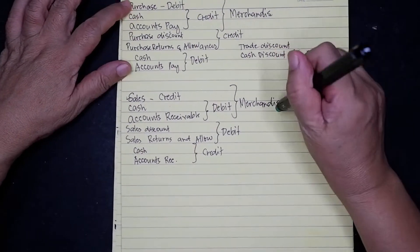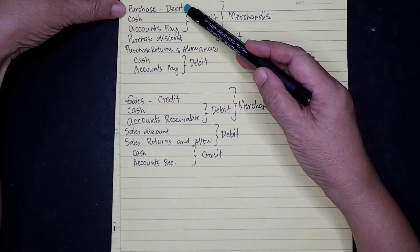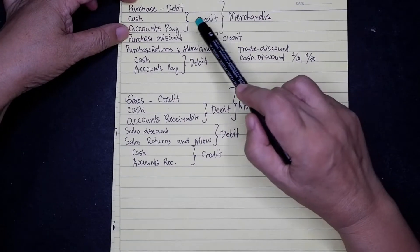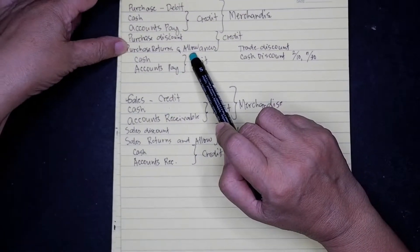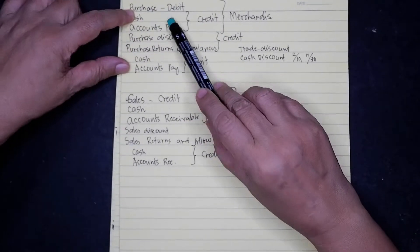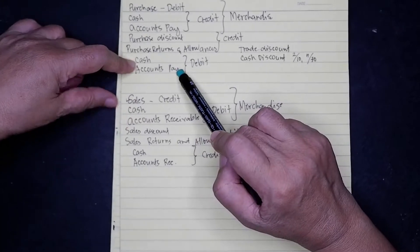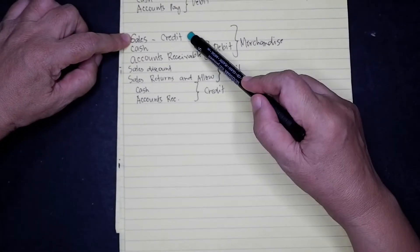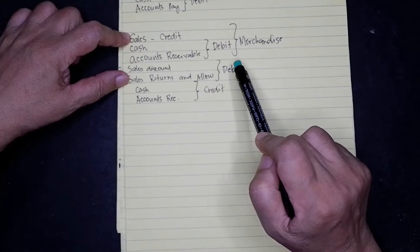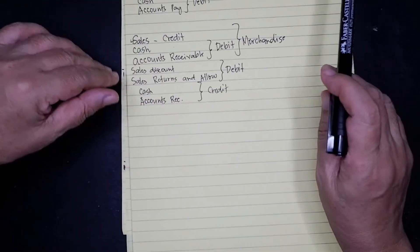To summarize: purchases is debit and its partner — cash and accounts payable — is on credit. Purchase discount and purchase returns and allowances is on the credit side, the other side of purchases, and their partners are cash and accounts payable. For sales, sales is credit. Sales discount and sales returns and allowances is debit, and their partners are cash and accounts receivable on the other side.